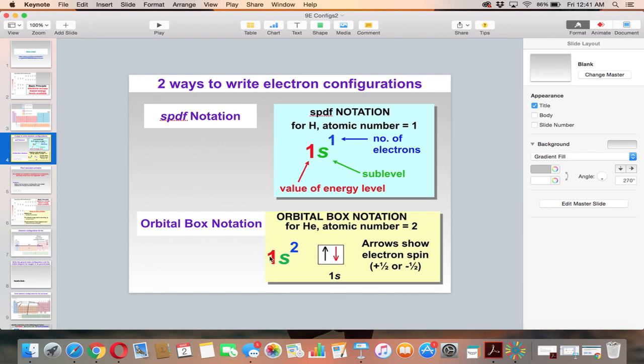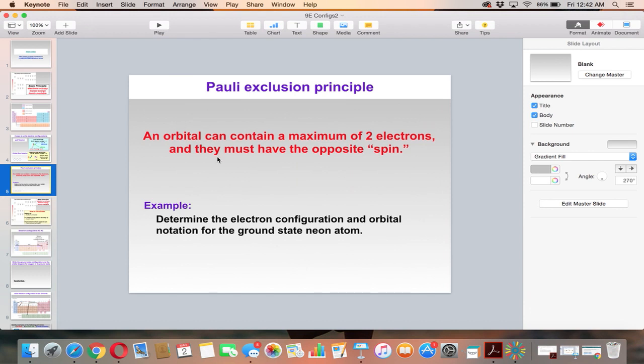So the 1 shows the energy level, the s shows the spherical shape, and the 2 shows that this one has two electrons, so this is actually helium. An orbital can contain a maximum of two electrons, and they must have opposite spin.